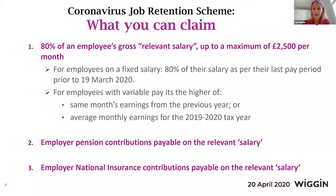For employees with variable pay, it's the higher of the same month's earnings for the previous year or the average monthly earnings for the 2019-2020 tax year. Commission, bonuses, and additional fees are excluded from what counts as salary. There are also specific rules around statutory benefits — sick pay, maternity pay, paternity pay, and bereavement — paid during the furlough period. Once you've calculated the relevant salary, you can potentially claim additional amounts for pension contributions and employer's national insurance contributions.